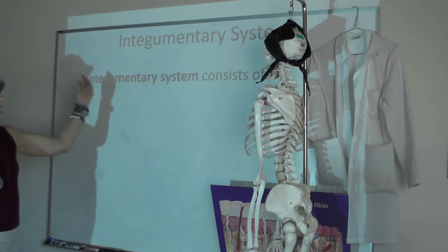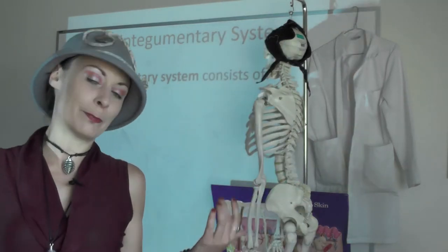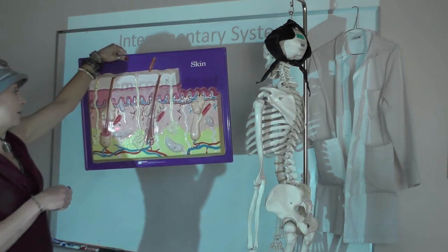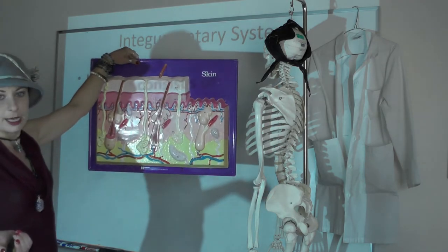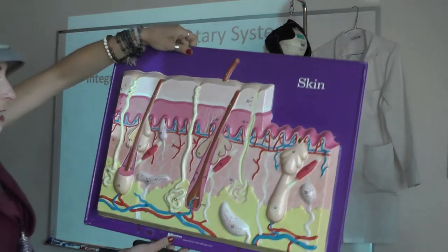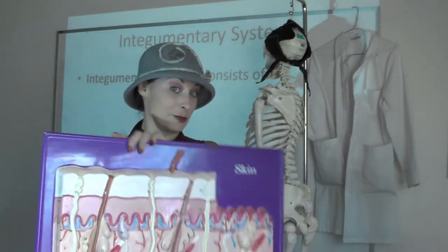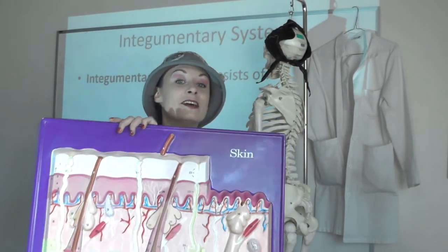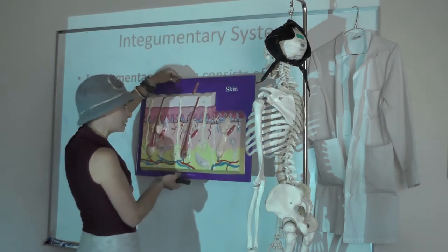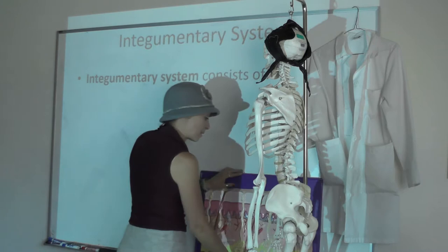The Integumentary System is probably the most simple system. A lot of instructors start here as the first system because it makes sense right after tissues. I think if we talk about sensor receptors in the skin now, you'd memorize it for the test and forget it. But since we already covered it for the nervous system, talking about it in the system where it resides will make a lot more sense. So sensation is one of the functions of the skin.